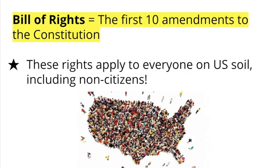These amendments mostly use the word "people" instead of "citizen." So today, judges interpret this to mean any people on U.S. soil have these rights, whether they're citizens or not. But it wasn't always understood that way in the past.